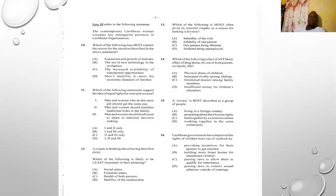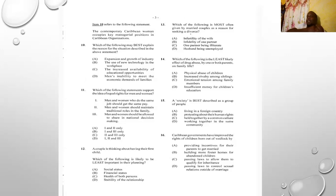Number fourteen: which of the following is the least likely effect of drug abuse by one or both parents on family life? A) physical abuse of children, B) increased rivalry among siblings, C) emotional tension among family members, D) insufficient money for children's education. The answer is B) increased rivalry among siblings — that has nothing to do with the parents' drug abuse problem.